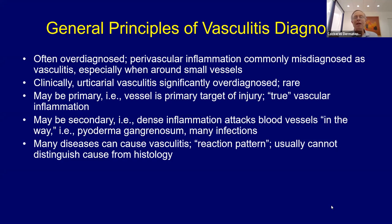For every real urticarial vasculitis you see, we see thousands of just routine urticarias. The blood vessel can be the primary target of injury — true vascular inflammation — or secondary involvement. If you get someone with a very dense inflammatory infiltrate like pyoderma gangrenosum, the blood vessels get involved because they're just in the way; that's not a true vasculitis. Finally, lots of diseases cause vasculitis — it's a reaction pattern. We can't tell the internist the specific cause; they have to work the patient up.